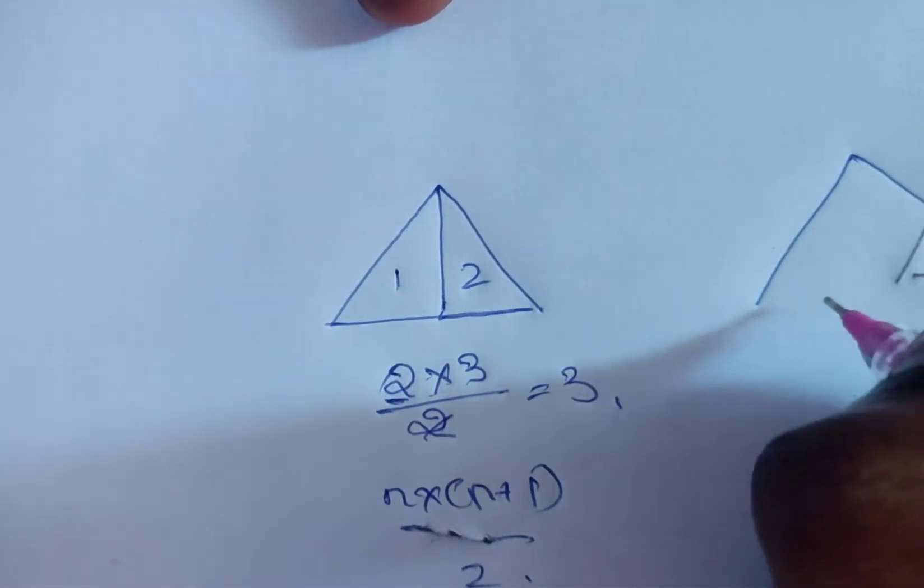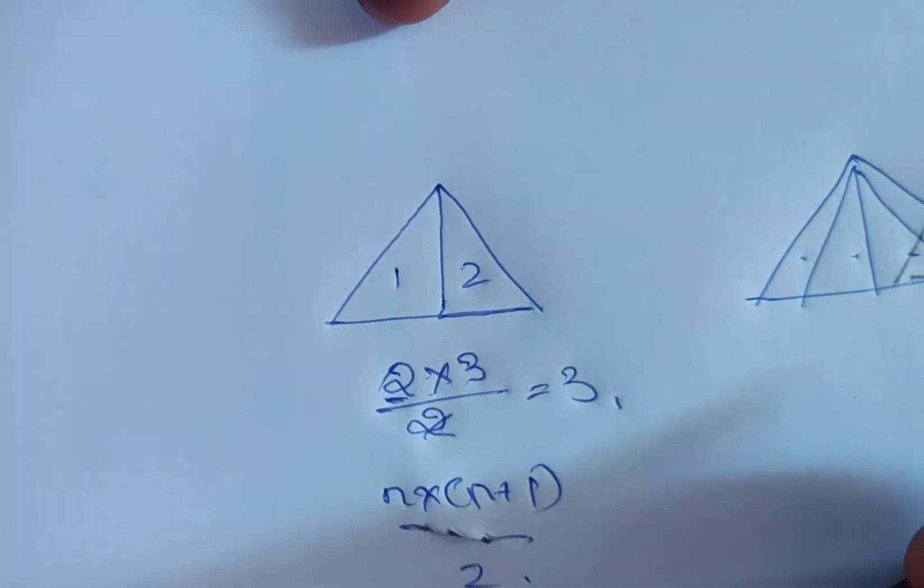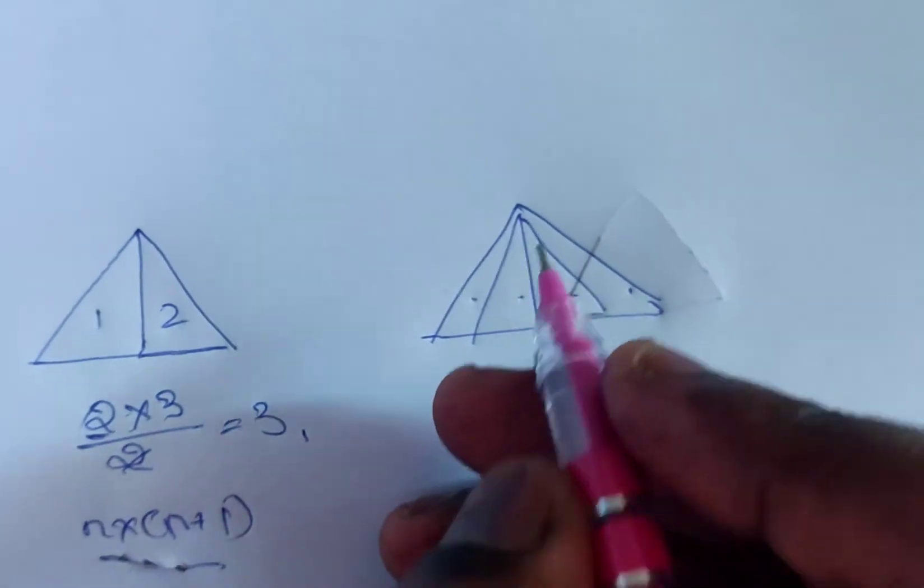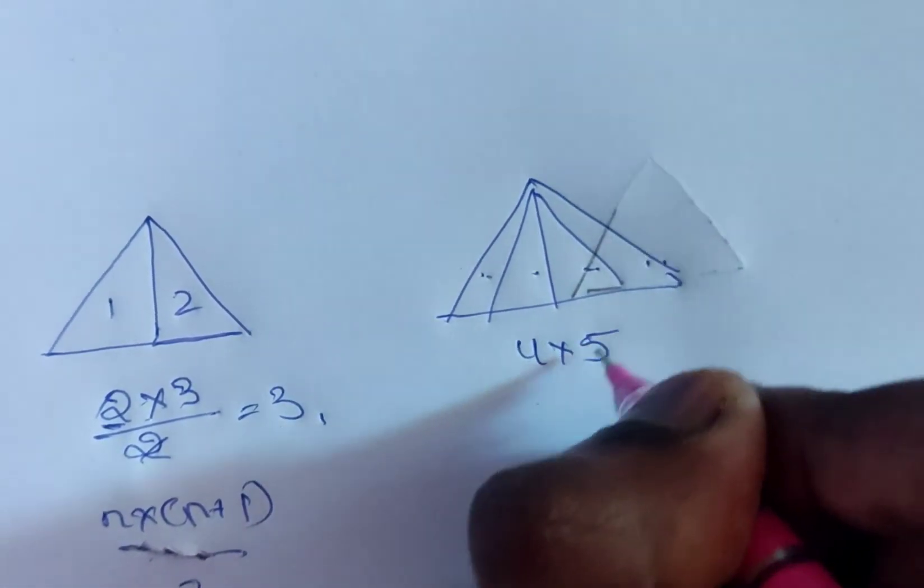And this method will work for any number of triangles. Let's say we have 1, 2, 3, 4 triangles. As you can see, the answer will be 4 times 5 divided by 2, that is equal to 10.